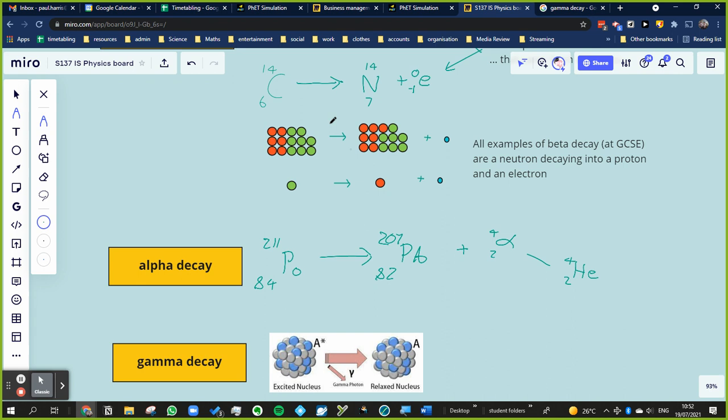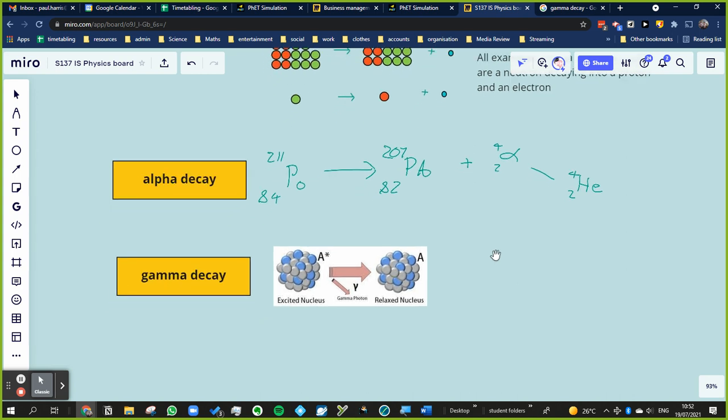And a beta particle is an electron that was emitted from the nucleus. And an alpha particle is a helium nucleus. All a nucleus is, is just a collection of protons and neutrons. And the number of protons determines the element and the number of neutrons determines the isotope. So that's a helium nucleus.